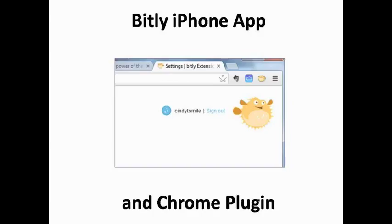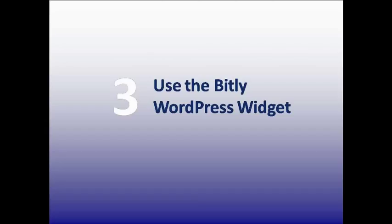If you have a WordPress blog, you can add a Bitly WordPress plugin that will automatically generate short links whenever you publish a new blog post. Bitly also offers a sidebar widget for blogs that allows you to display links filtered by either search topic or your most popular post. The Bitly widget integrates with Twitter feed, HubSpot, and Buffer.